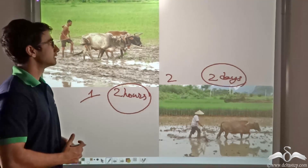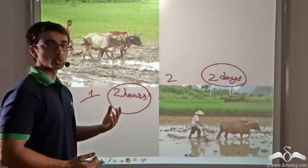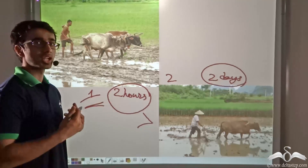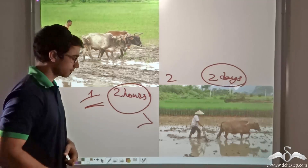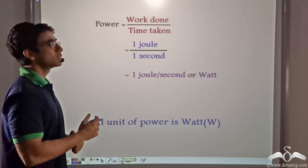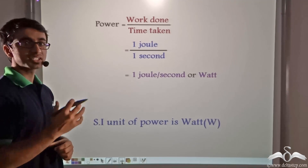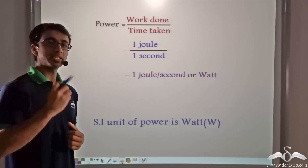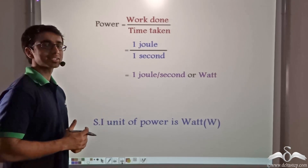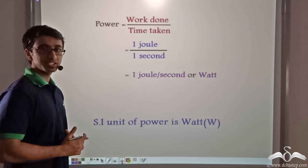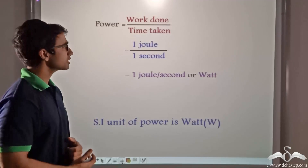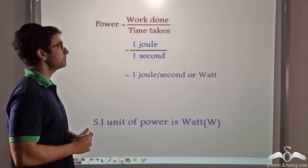So if we are asked who has more power — farmer one or farmer two — the answer will be farmer number one. Farmer one has more power than farmer two. Power can be defined as the work done divided by time taken. Whenever work is being done, a certain amount of energy is being consumed. Work done is equal to the energy consumed, so the unit for energy and work is the same — that is joules.